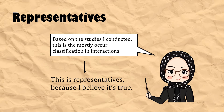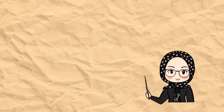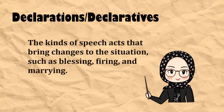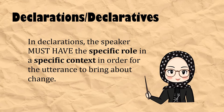Another example is when I say 'math is more difficult than English' — I give my opinion about math and English. Statements, opinions, conclusions, and descriptions are examples of representative speech acts. The second classification is declarations or declaratives. These are kinds of speech acts that bring changes to the situation, such as blessing, firing — 'you're fired' — and marrying — 'I pronounce you husband and wife.' The difference is that in declarations, the speaker must have a specific role in a specific context for the utterance to bring about change.